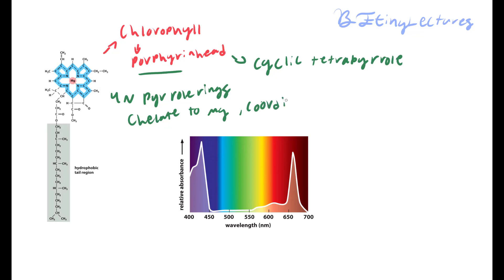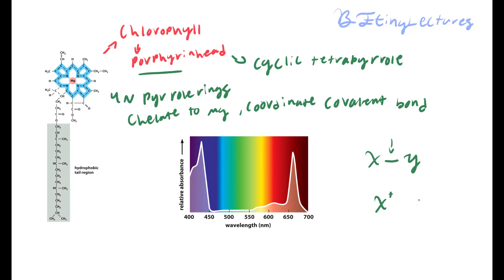You could classify this as a coordinate covalent bond. A coordinate covalent bond means that all the electrons making the bond come from one atom. Normally two atoms both share electrons, but with a coordinate covalent bond one atom gives up all its electrons to make the bond. The MCAT may throw a question saying this is a coordinate ionic bond — that would be incorrect. The only coordinate bond that exists is the coordinate covalent bond.